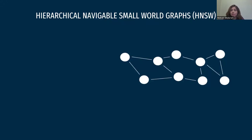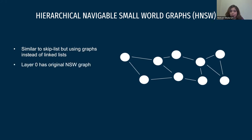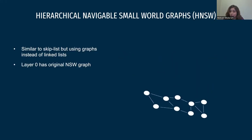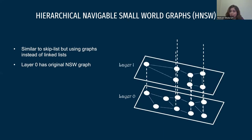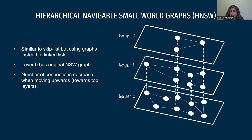When we talk about small world graphs, we can convert them hierarchically. For example, we have a navigable small world graph and we make it into layer zero of our hierarchy. We then build layers on top of it. Each layer has fewer nodes and longer connections — generally, longer connections and fewer connections when moving upwards.